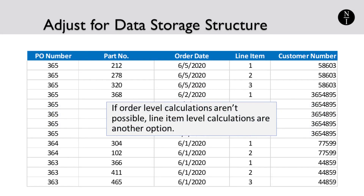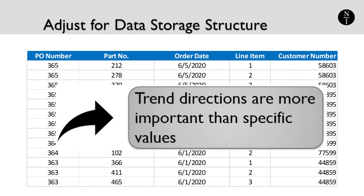Sometimes performing the fill rate calculation at the order level is impractical depending on how order data is stored. For example, if your data system doesn't allow you to easily consolidate measurements of all line items together, you can calculate fill rate at the line item level — measuring the percentage of line items shipped in full. When orders combine a variety of product units of measure, this line item approach can be an alternative. Which calculation level you use is less important than monitoring changes in this metric over time and determining the root cause of decreases.